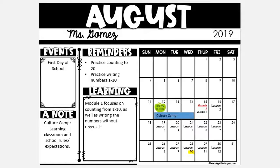For September you'll see there's a Labor Day — we're off on Monday. Module 1 focuses on counting from 1 to 10 and writing numbers without reversals. The first two weeks we focus on numbers 1 through 5, but I want to start focusing on 1 through 10 because in a couple of weeks we'll start going from 6 to 10. If they're not firm in writing 1 through 5, they'll have a difficult time with 6 to 10, so we want to make sure they're firm on all 10 numbers.